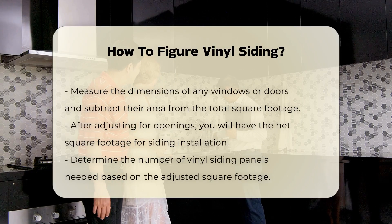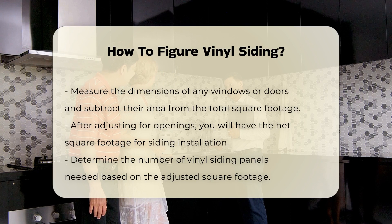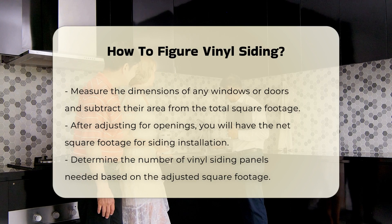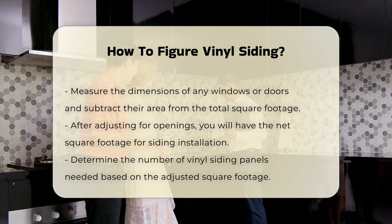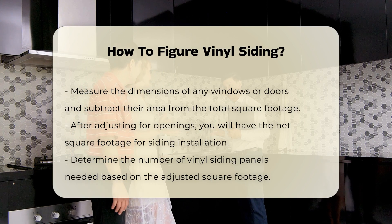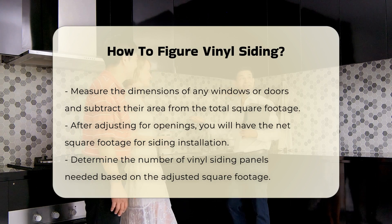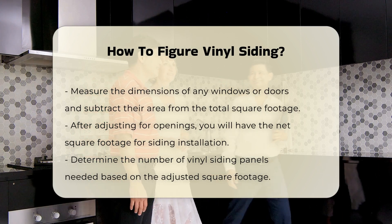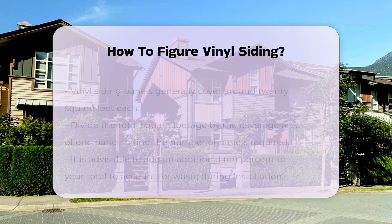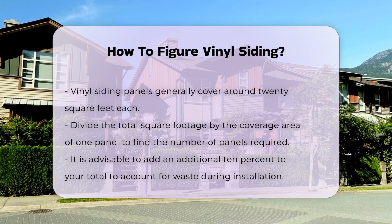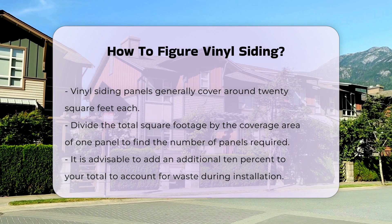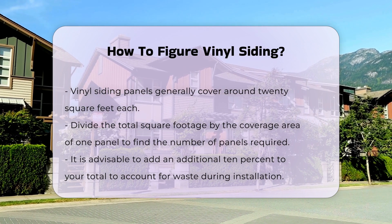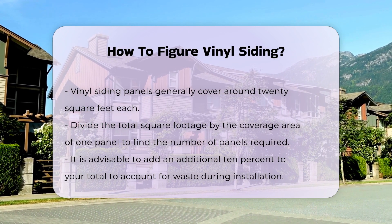If there are windows or doors, measure their dimensions and subtract this area from the total square footage. Once you have the adjusted square footage, you can determine how many panels of vinyl siding you will need. Vinyl siding typically comes in panels that cover a specific area, often around 20 square feet. To find out how many panels you need, divide the total square footage by the coverage area of one panel.